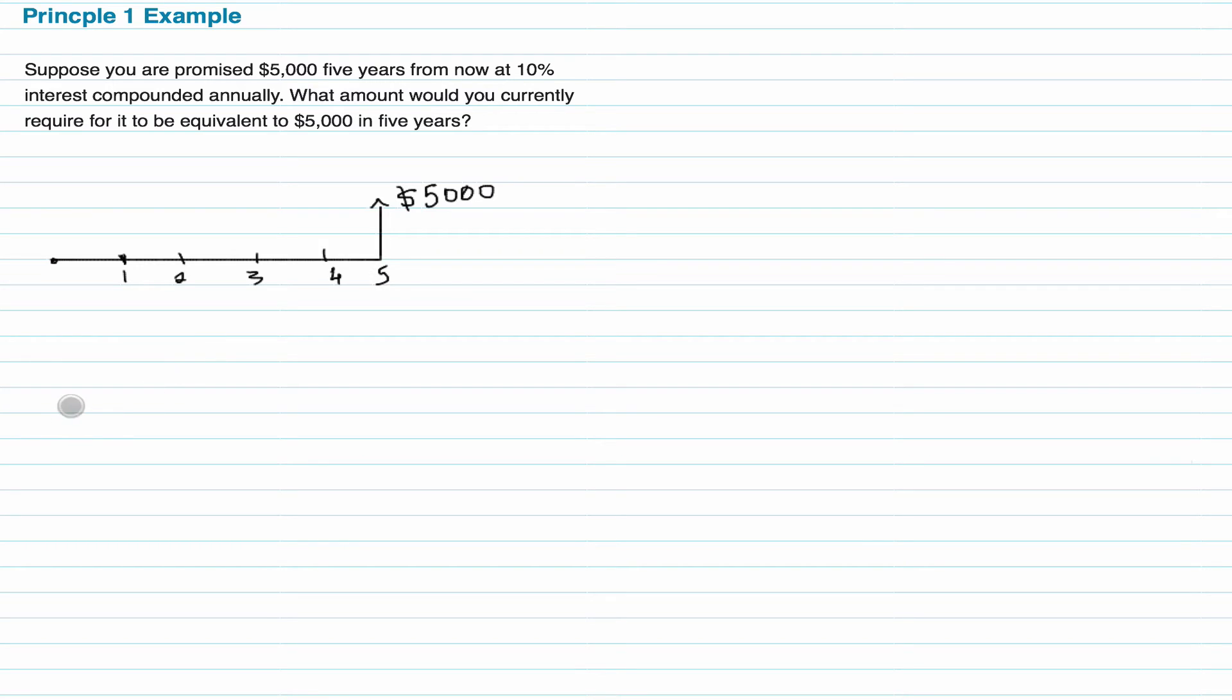This is one cash flow, and what I'm asking is, how much do you need now for the value to be equivalent to $5,000? So that it becomes $5,000. So what is your present value? Well, we have our equation, which is F is equal to P times 1 plus i to the power of n. And we are trying to find out P, we have F, and we have i, which is 10%, and n is equal to 5.